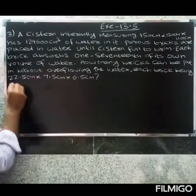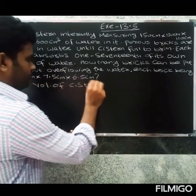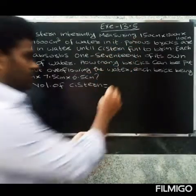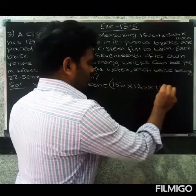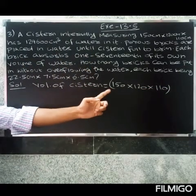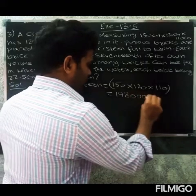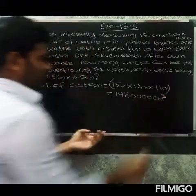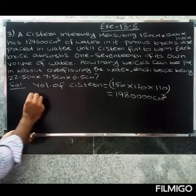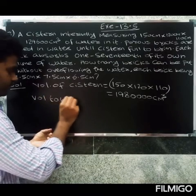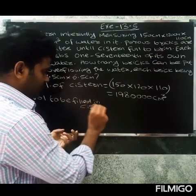First, volume of system: 150 into 120 into 110. When we measure this, we get 1,980,000 cubic centimeters. So volume of system is 1,980,000 cubic centimeters.